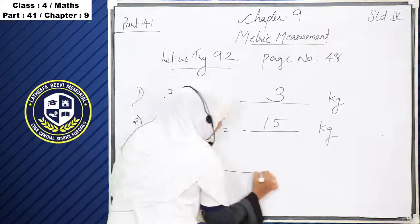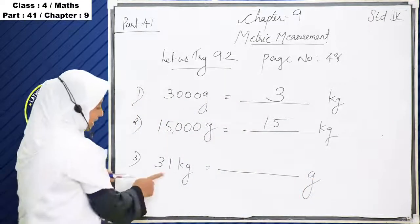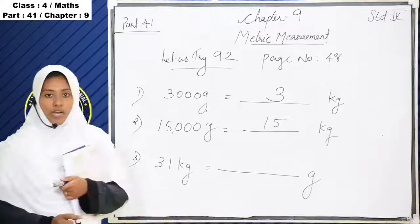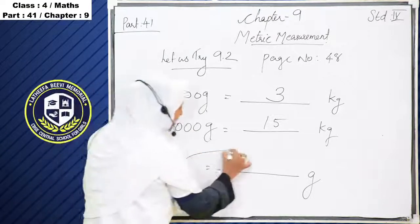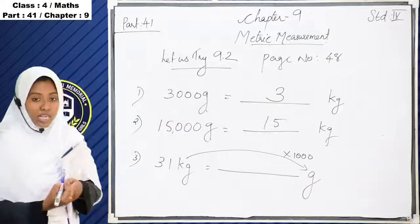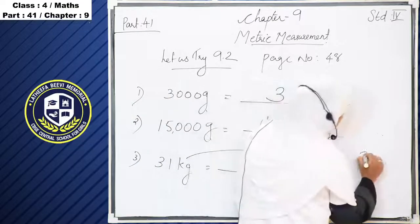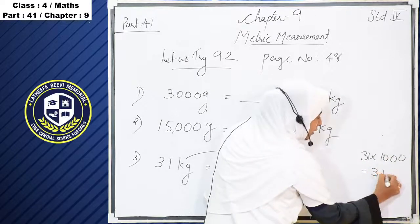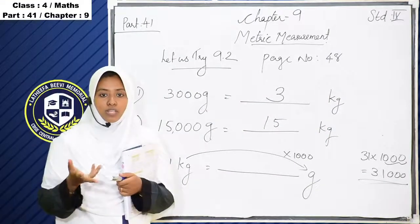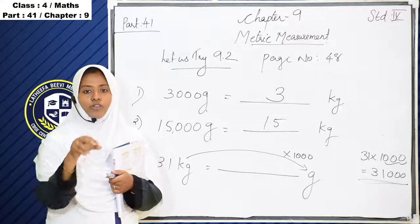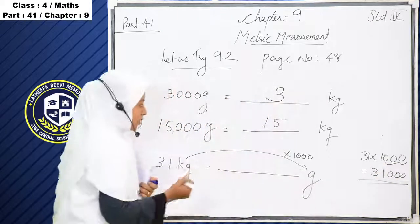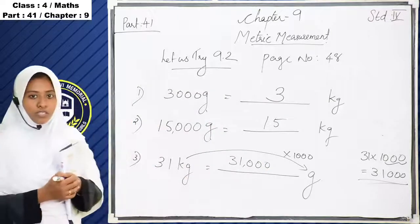Next one: 31 kilogram is equal to dash gram. We have to convert kilogram into gram, so we multiply by 1000. 31 multiplied by 1000 gives us 31,000. So 31 kilogram is equal to 31,000 gram.